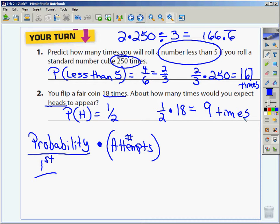Is everybody okay with the first two examples? When you're predicting, you need to know what the probability is that that event can occur. And you multiply that probability by the number of times you're going to repeat that process or attempt to get that outcome.